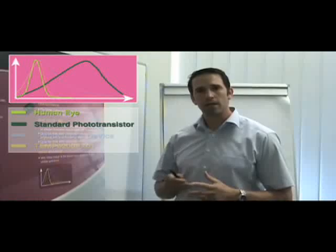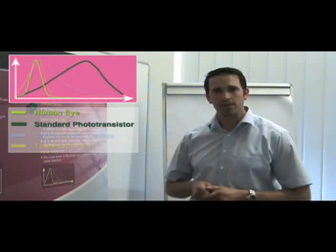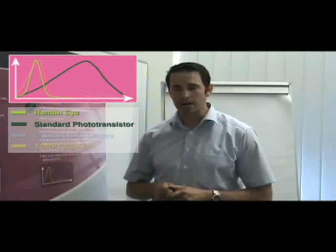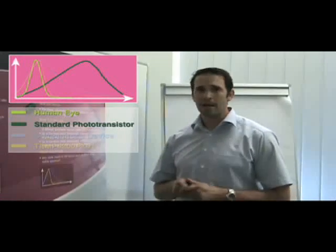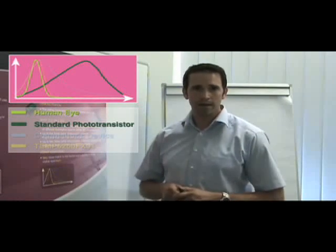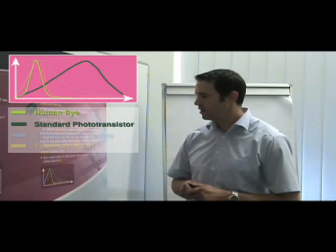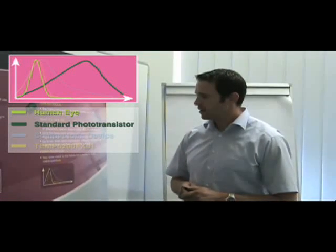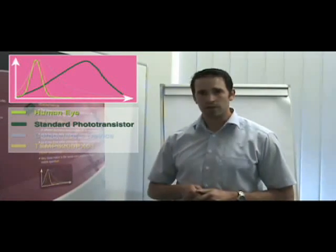A standard technology-based phototransistor rates different light sources at different brightness levels. For example, a very dim incandescent light bulb with a high portion of infrared in its emission spectrum would be rated as a very bright light source using a standard phototransistor.